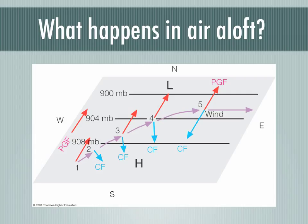We place our cell of air at position 1 and it will try to blow northward, but the Coriolis force will immediately pick up and curve the air to its right.